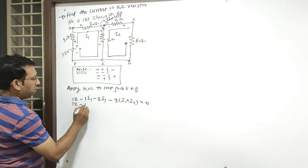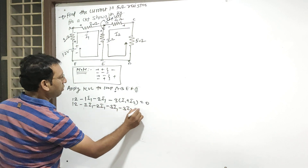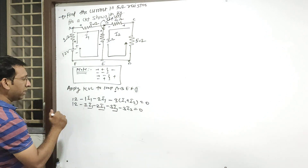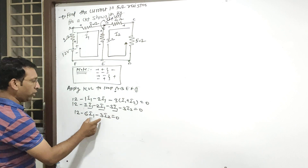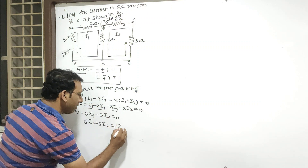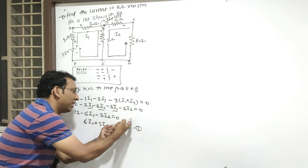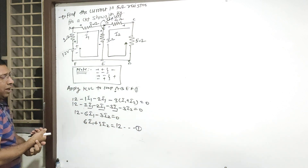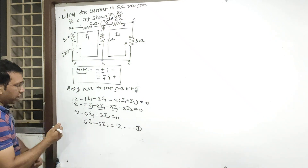इसको solve कर लो: 12 minus 1 I1 minus 2 I1 minus 3 I1 minus 3 I2 is equals to 0. तो I1 को combine करो — 3 और 2 यानी 5 और एक 6 — 12 minus 6 I1 minus 3 I2 is equals to 0. इन दोनों को इधर लेके जाता हूँ — तो 6 I1 plus 3 I2 equals 12. Do not confuse — clear हो गया? Yes — चलिए, अपना equation 1 मिला।